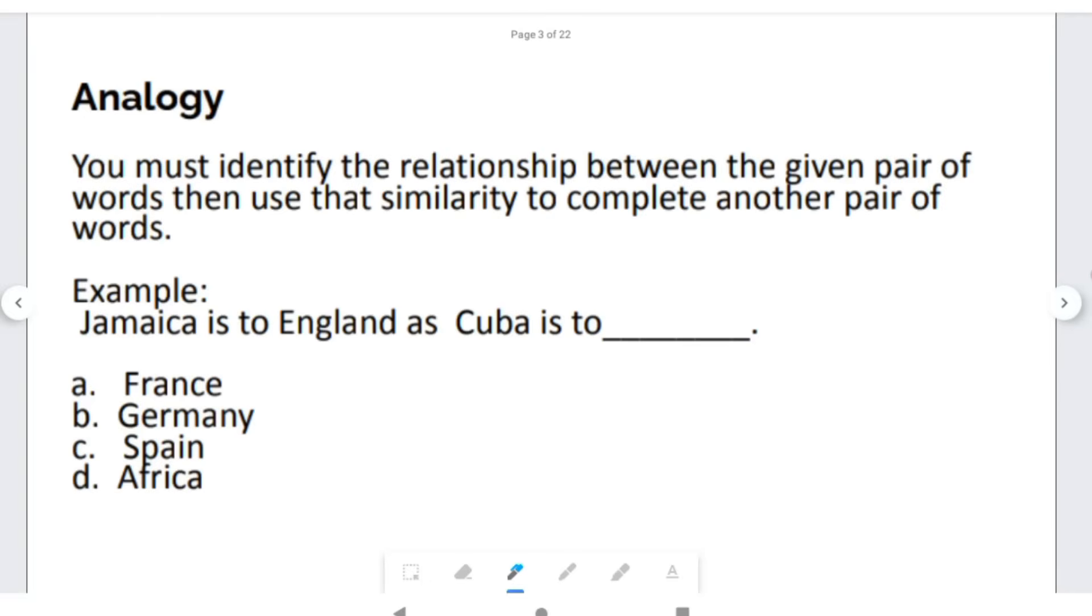Let us look at Analogy Type Questions. For Analogy Type Questions, you must identify the relationship between the given pair of words, then use that similarity to complete another pair of words. The question you have to ask yourself, what is a relationship between the first pair of words? The first pair of words in this example is Jamaica is to England, as Cuba is to. The first relationship is that Jamaica was a colony of England. The question you have to ask yourself is Cuba was a colony of which country? The answer here for this Analogy Type Question is Spain.